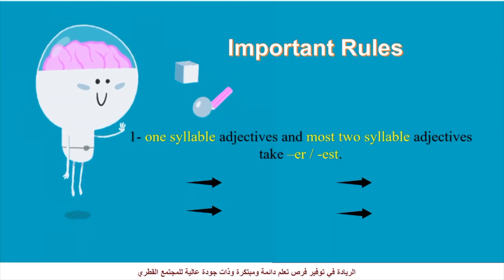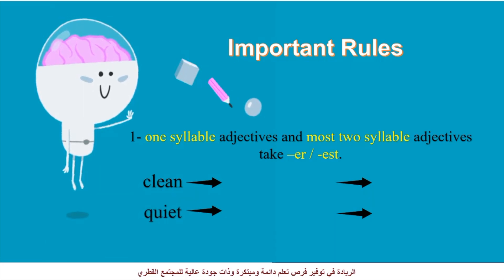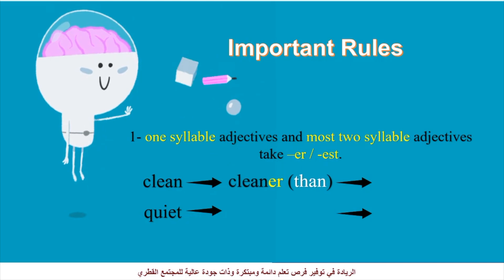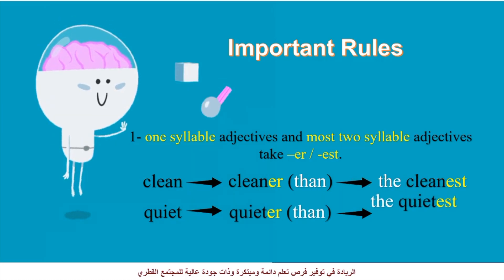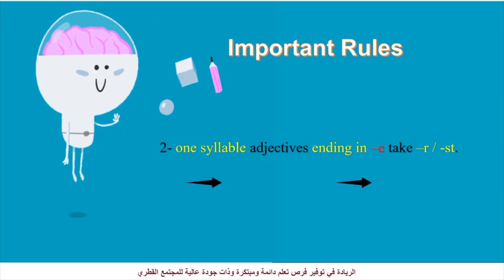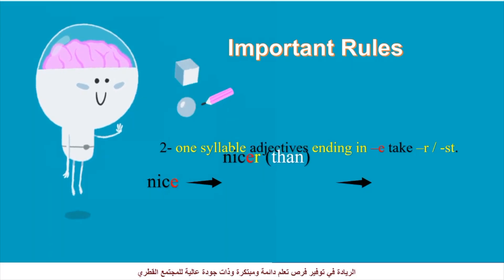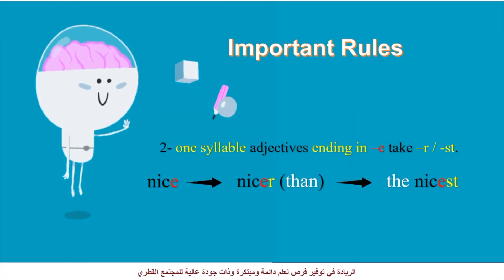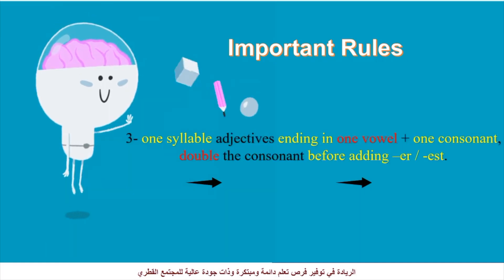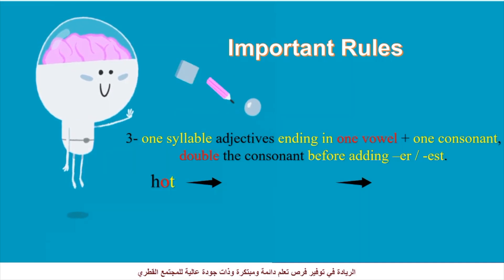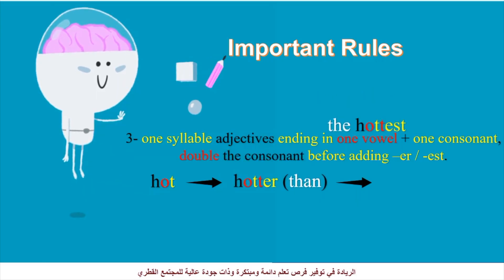Important rules: One-syllable adjectives and most two-syllable adjectives take ER and EST. So: clean — cleaner than — the cleanest; quiet — quieter than — the quietest. One-syllable adjectives ending in E, like nice, take R and EST only: nice — nicer than — the nicest. For one-syllable adjectives ending in a vowel and a consonant, we double the consonant before adding ER and EST: hot — hotter than — the hottest.